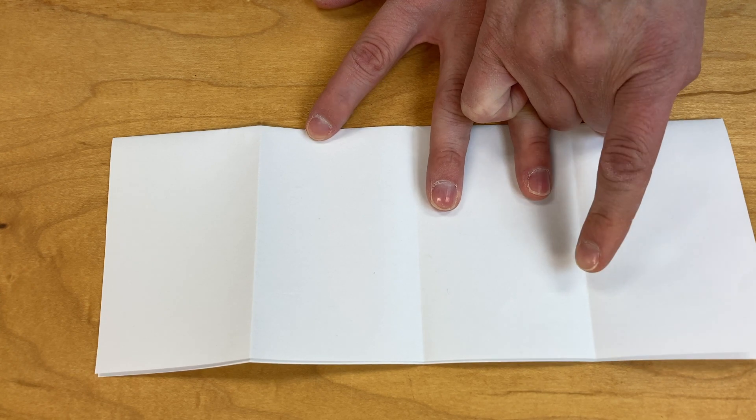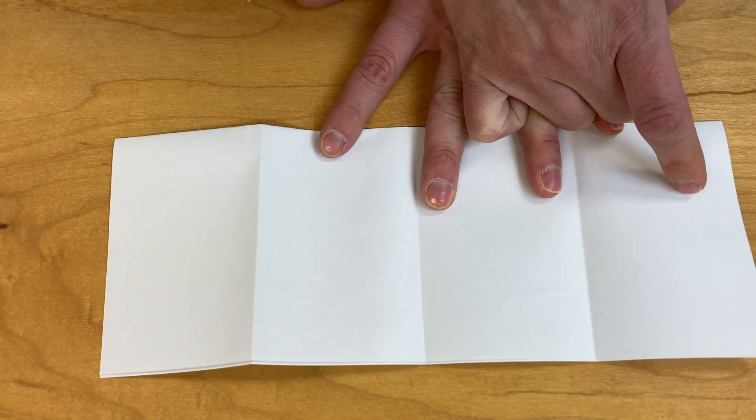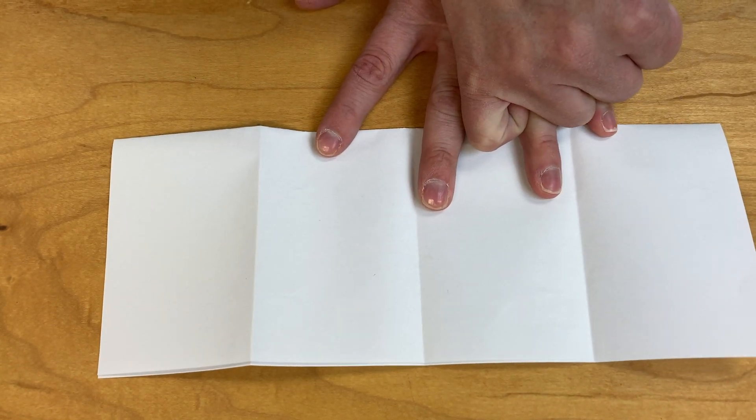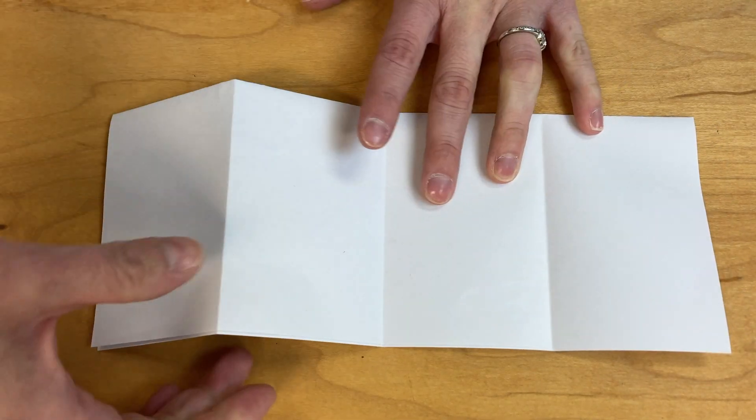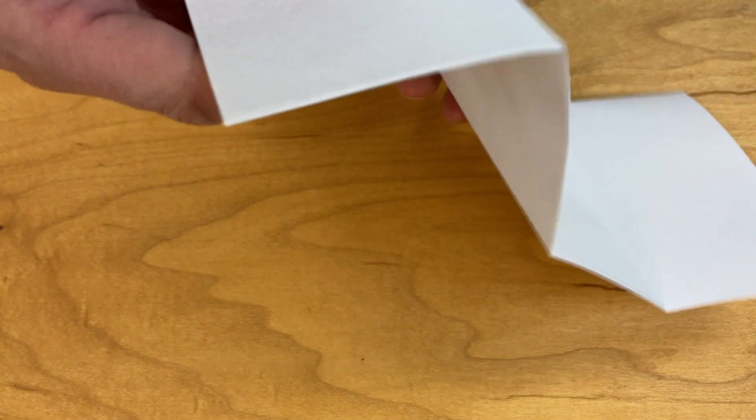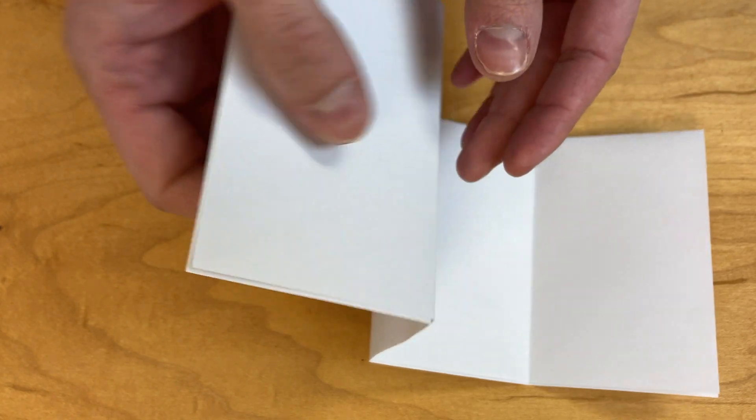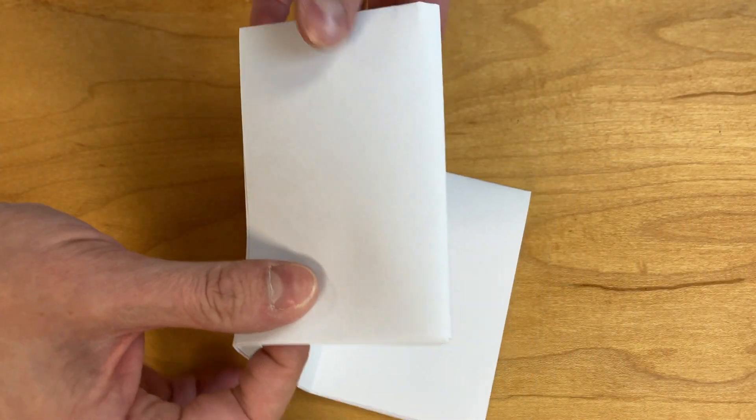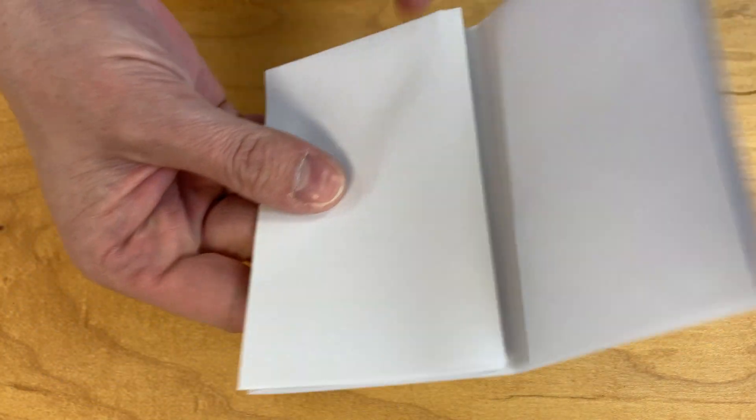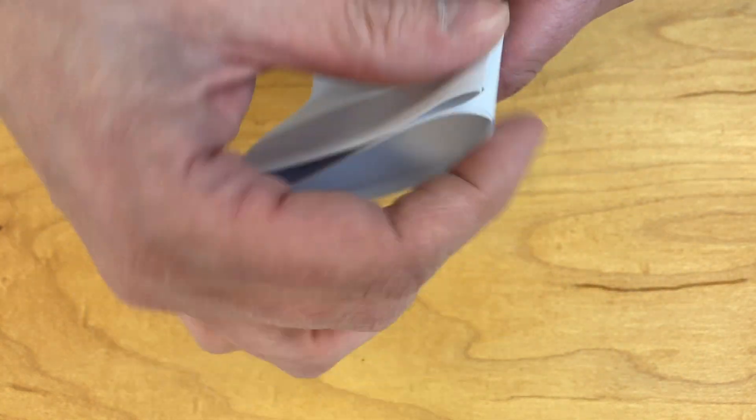Now this next part's a little bit tricky, so watch very closely what I do and get someone to help you in your family if you need a little bit of help. I'm going to take the fold and I'm going to go every other, so I fold it this way, fold it back, and then I curve it back again. So it's kind of like a pattern. Let me show you again.